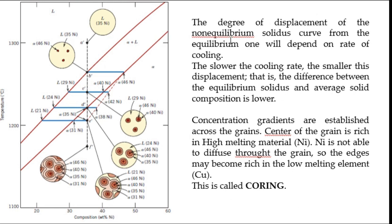Below D' at point E', the alpha phase should have been 31% nickel and 69% copper, but it is 35% nickel and 65% copper because the solidus line has shifted right. The degree of displacement of the non-equilibrium solidus from the equilibrium one depends on the rate of cooling. A very high cooling rate shifts the curve further right; a very low cooling rate barely shifts it; theoretically at zero cooling rate we get the original solidus.